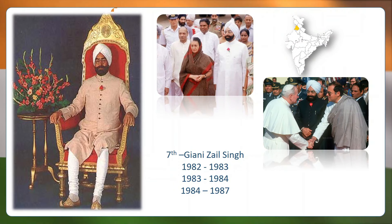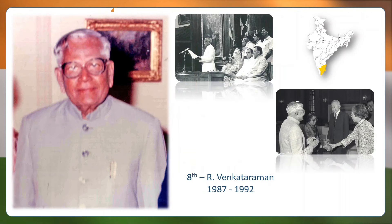Giani Zail Singh was the seventh President of India serving from 1982 to 1987. He was born in Sandhavan, Punjab and he was the first Sikh President of India. Zail Singh was elected as Chief Minister of Punjab in 1972. He died of injuries in 1994 after a car accident.